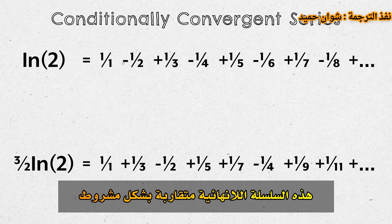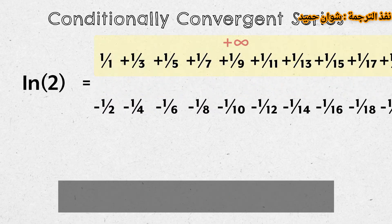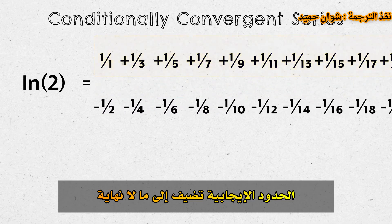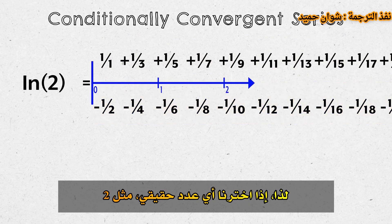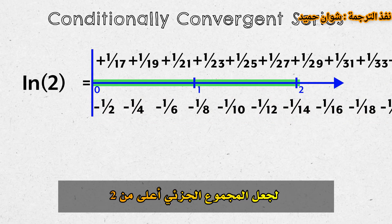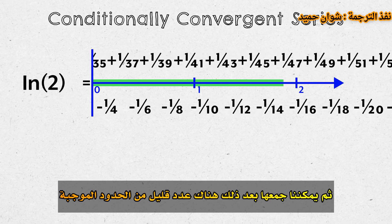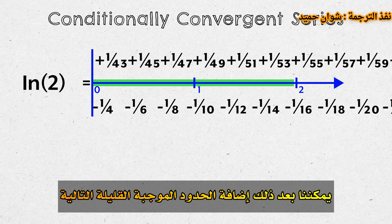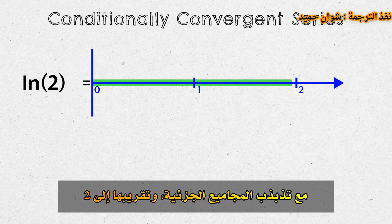These infinite series are conditionally convergent. What this means is that if all terms were positive, the series would not converge — the positive terms would add up to infinity, and the negative terms would add up to negative infinity. So if we pick any real number, like 2, we can add up the first few positive terms to bring the partial sum above 2, then add the first few negative terms to bring it below 2, and so on, with the partial sums oscillating around and converging to 2.